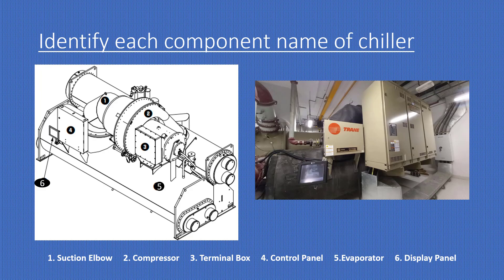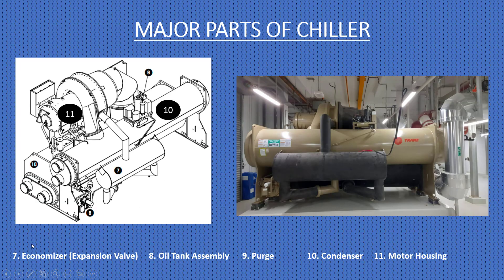The important components are: one — suction elbow, two — compressor, three — terminal box, four — electrical control panel, five — evaporator, six — display panel. You can take a manual picture as well as a side photo, then compare them to understand the equipment better.